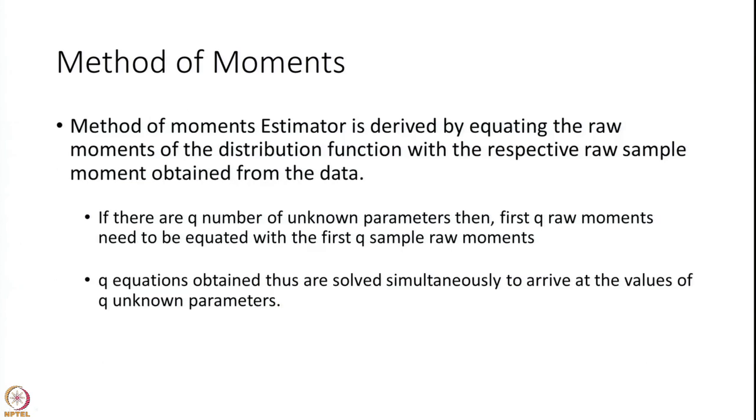In the method of moments, we equate the population moments with the sample raw moments. We take the population first raw moment and equate it to the sample first raw moment, the population second raw moment and equate it to the sample second raw moment, and so on. If there are q unknown parameters, we take the first q raw moments from the population and the first q raw moments from the sample and equate them. The population moments contain the unknown parameter theta, while the sample raw moments are known from data. So we have q equations with q unknowns and we solve them simultaneously.